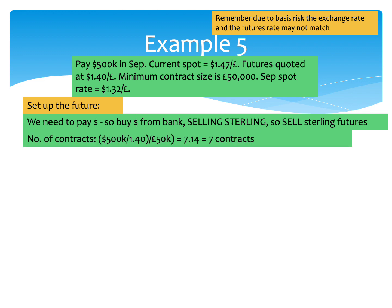The second thing we need to work out is the number of contracts. The problem is we want to take the size of the transaction we're trying to hedge — so $500,000 — and divide it by the size of a contract, which is £50,000. But you can't divide dollars by sterling, so we've got to convert the $500,000 into sterling using the futures price. Whatever the September futures are quoted at — $1.40 in this case — take your $500,000, convert it into sterling using that rate, then divide by £50,000. That gives us 7.14 contracts, so we round down to seven contracts.